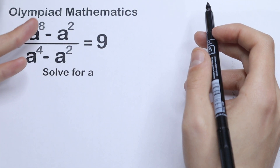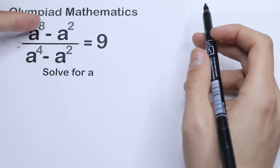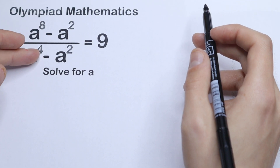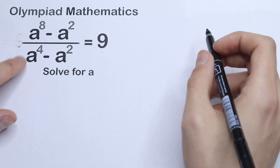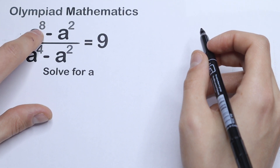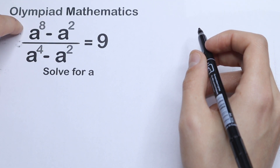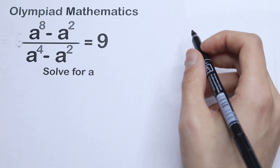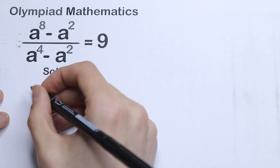On the first side this question is really hard because we have huge powers — we have eighth power, fourth power. So how can we solve it? As you can see from our denominator, we can factor out a squared. So let's do this first — let's factor out a squared.